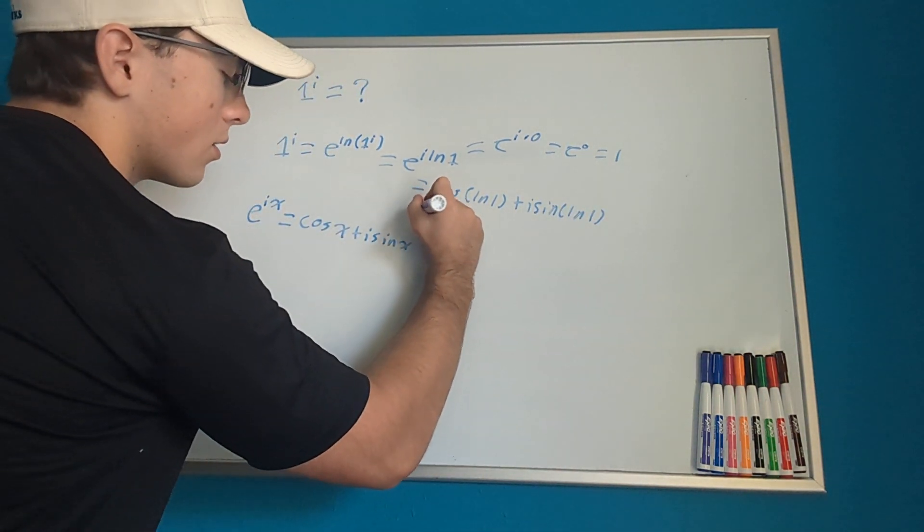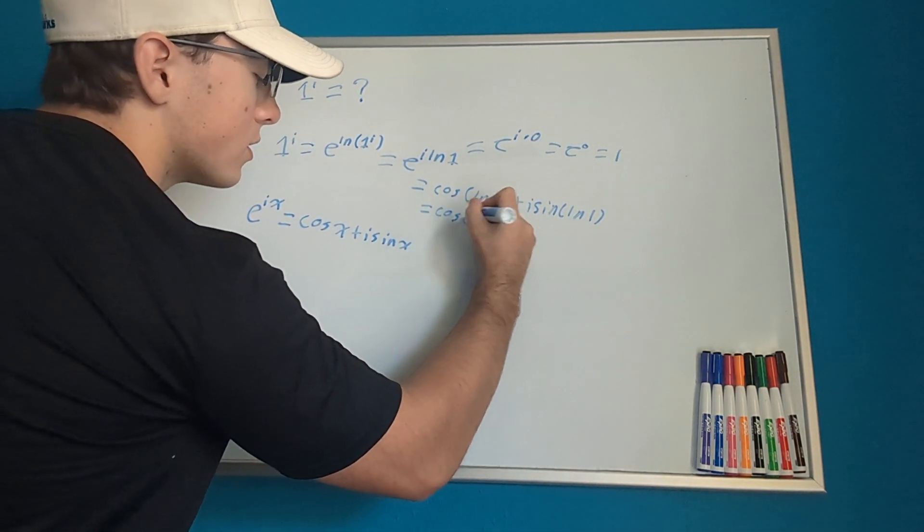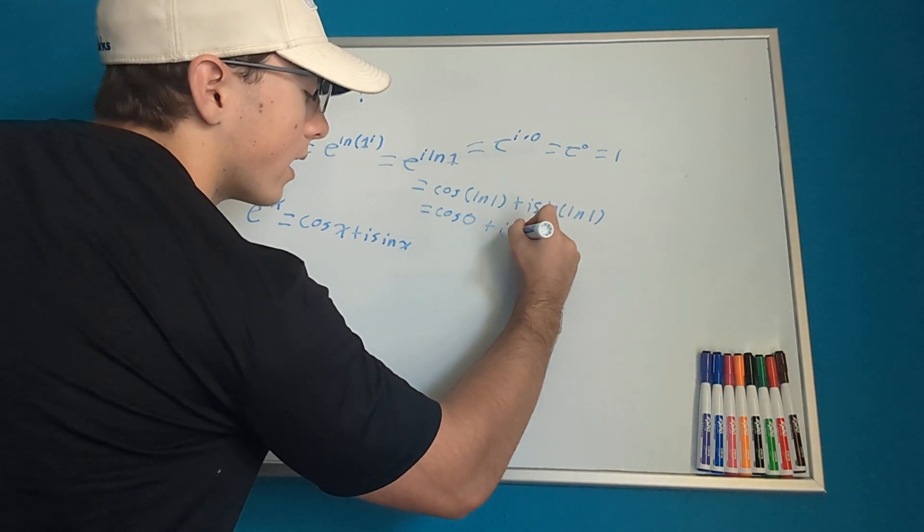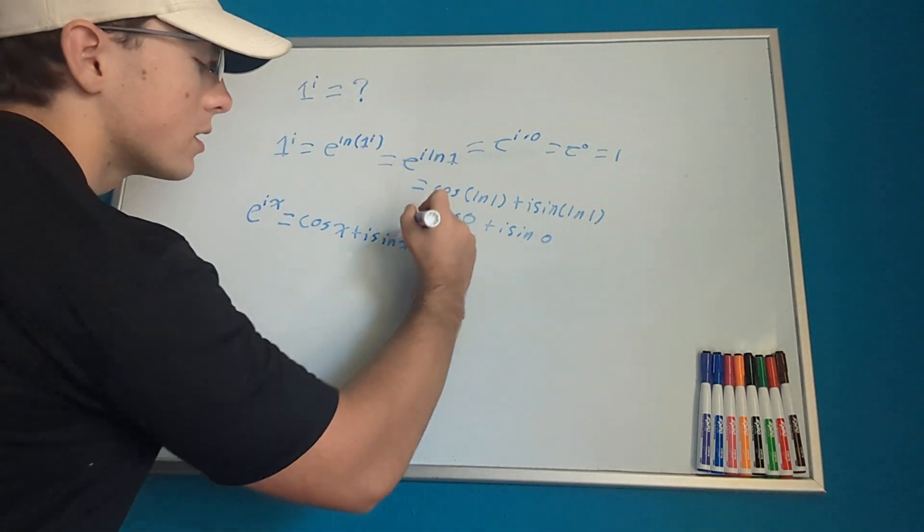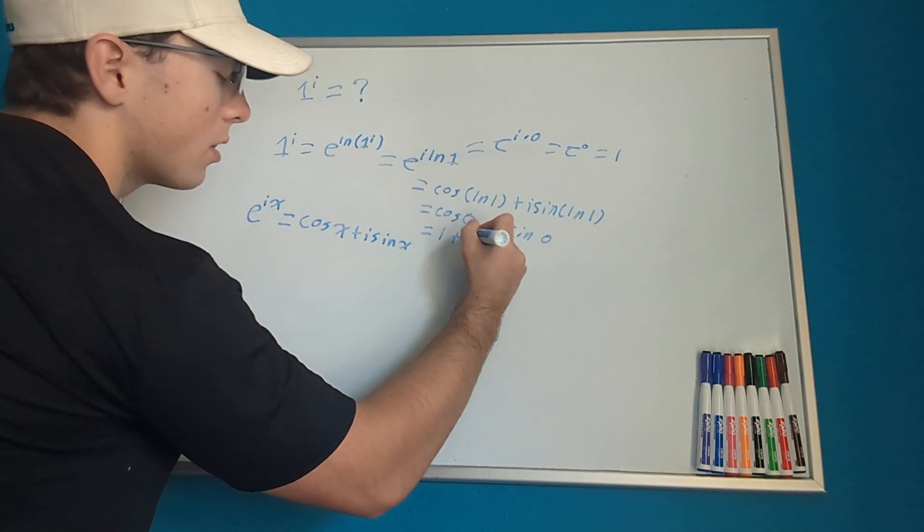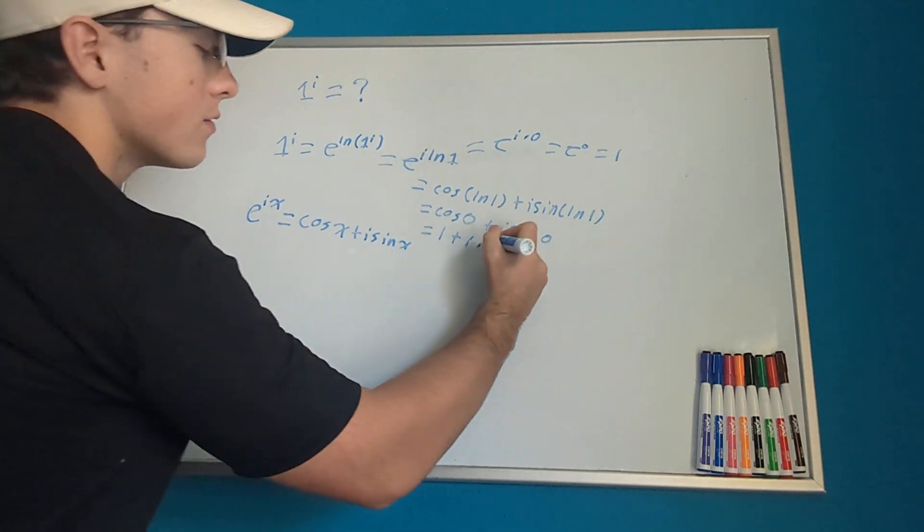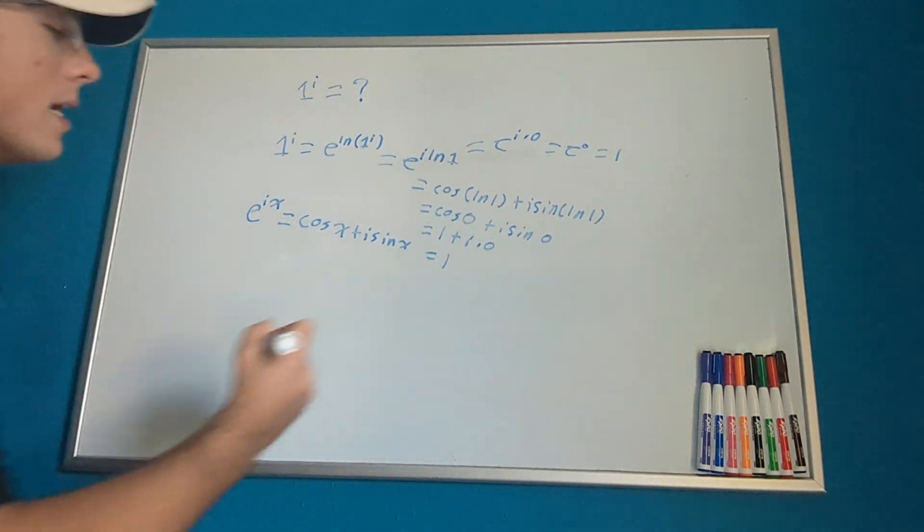Well, we know the natural log of 1 is 0. So this equals cosine of 0 plus i sine of 0. Cosine of 0 is 1 plus i times sine of 0 is 0. So this, once again, equals 1.